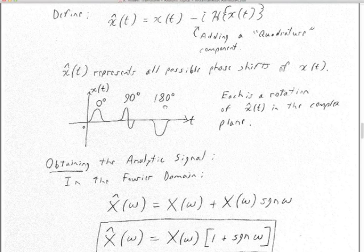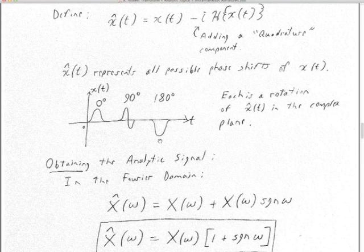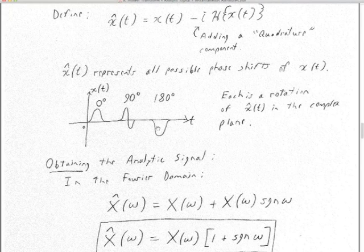180-degree phase data is just taking the zero phase wavelet and multiplying by minus one. You could pick the reflection at the bottom of the trough instead of the top of the peak. There's been a longstanding argument between Texans and the Dutch about which way you should plot your data for which kind of reflection — Trexler and I talk about that in our seismic interpretation class.